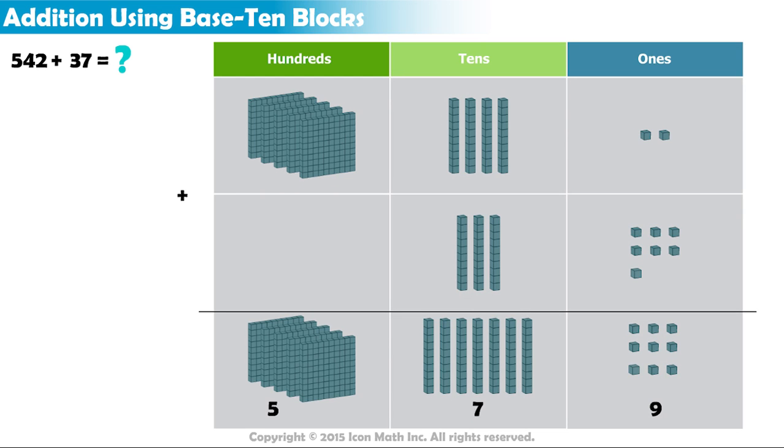As you can see here, we ended up with 5 hundreds, 7 tens, and 9 units, so the sum is 579.